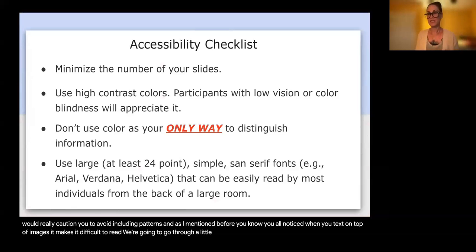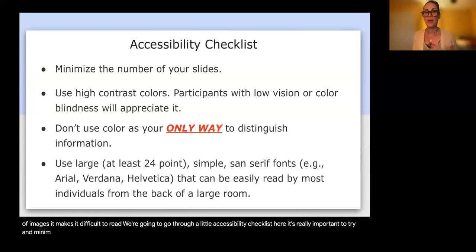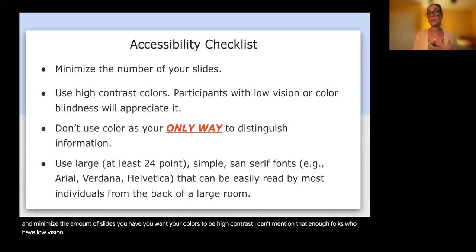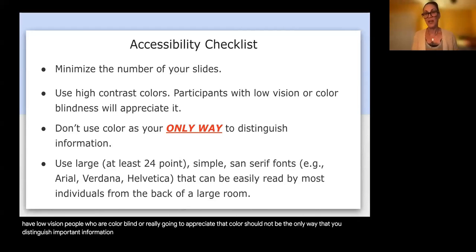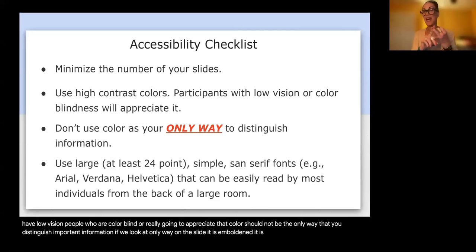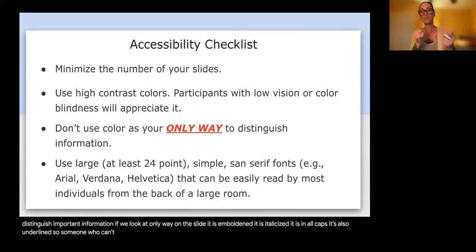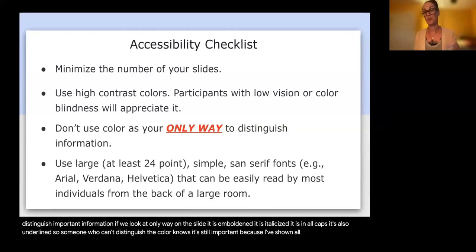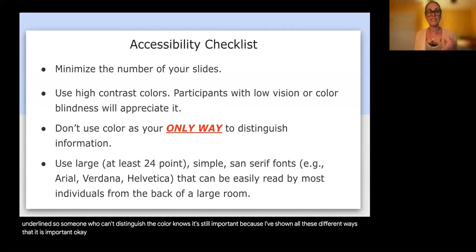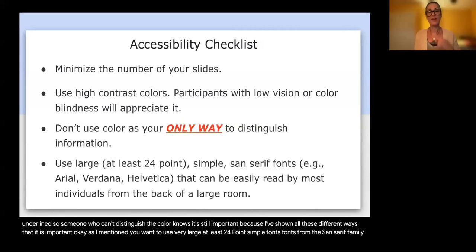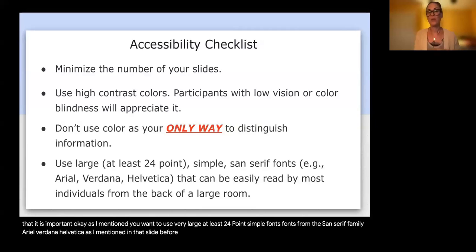Here's an accessibility checklist. It's really important to minimize the amount of slides you have. You want your colors to be high contrast — I can't mention that enough. Folks who have low vision and people who are colorblind will really appreciate that. Color should not be the ONLY way that you distinguish important information — notice that 'only way' on this slide is emboldened, italicized, in all caps, and underlined. Someone who can't distinguish color still knows it's important. Use very large, at least 24 point, simple fonts from the sans serif family — Arial, Verdana, Helvetica.